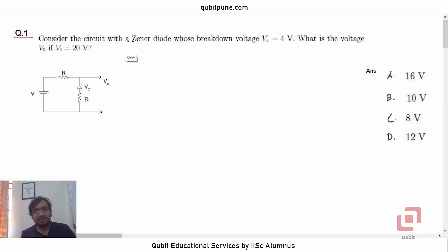Consider the circuit with a zener diode whose breakdown voltage Vz is 4V. What is the voltage V0 if Vi is equal to 20V? And this is the circuit.